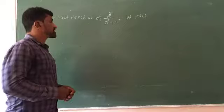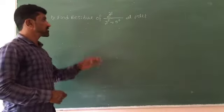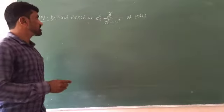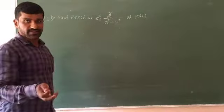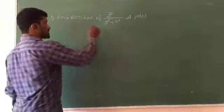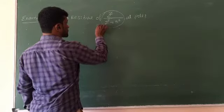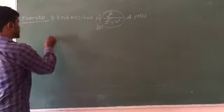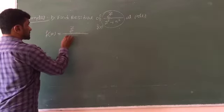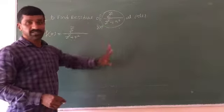Find the residue of e raised to z divided by z squared plus pi squared. This example uses the pole concept, so we find the residue using that concept. The function f(z) is equal to e raised to z divided by z squared plus pi squared. Now we find the poles.